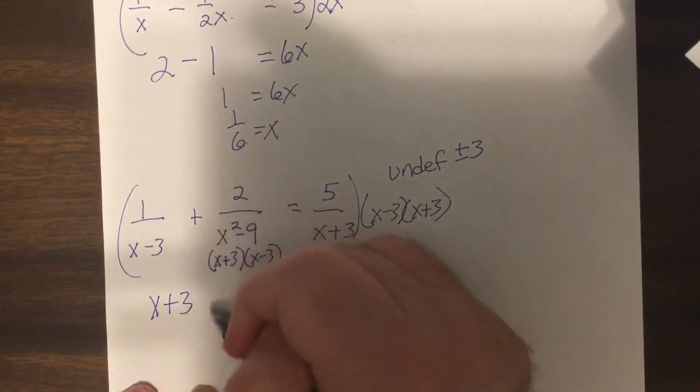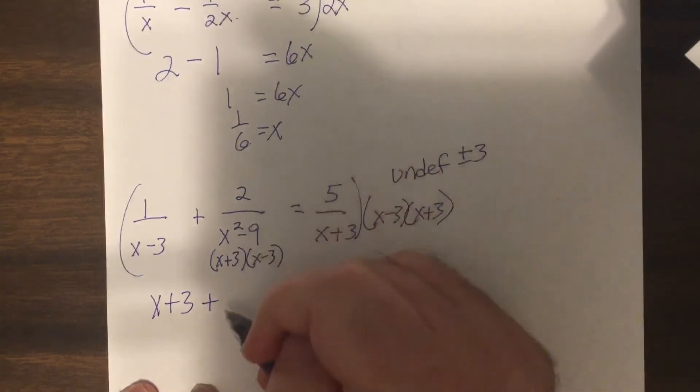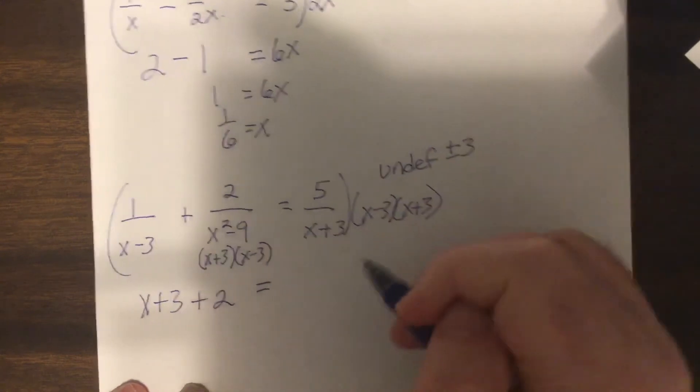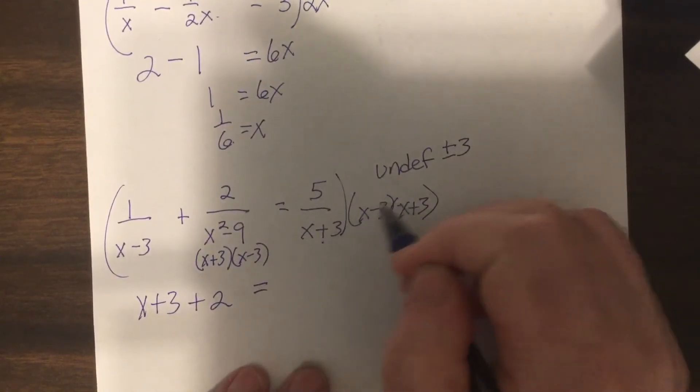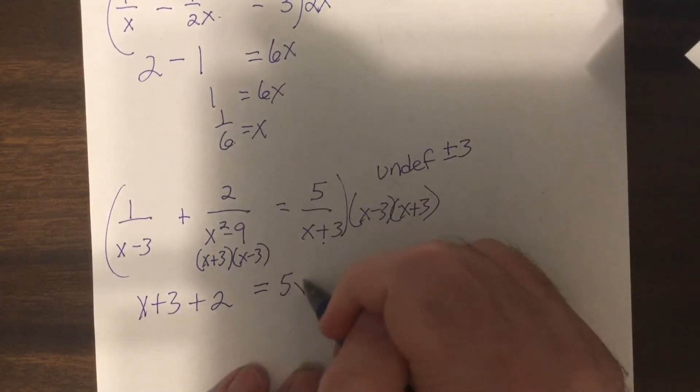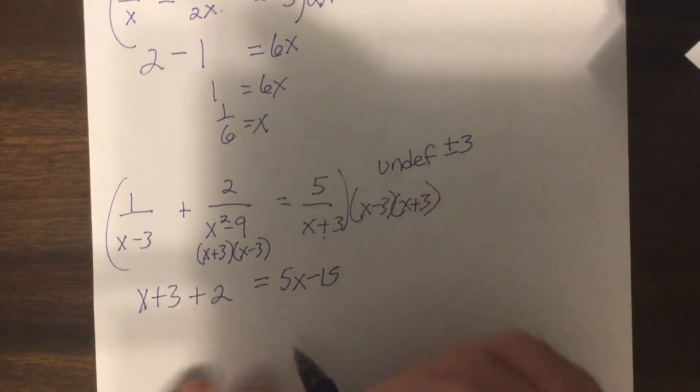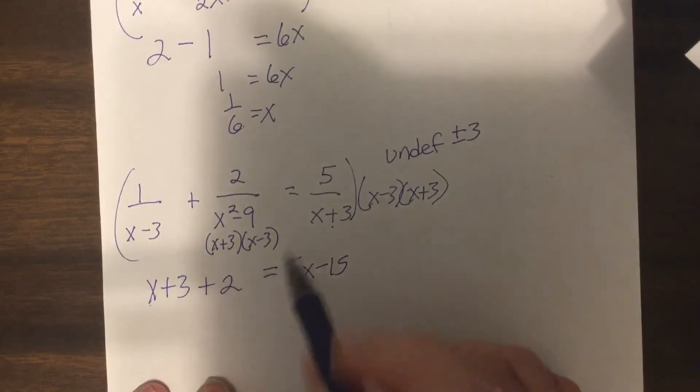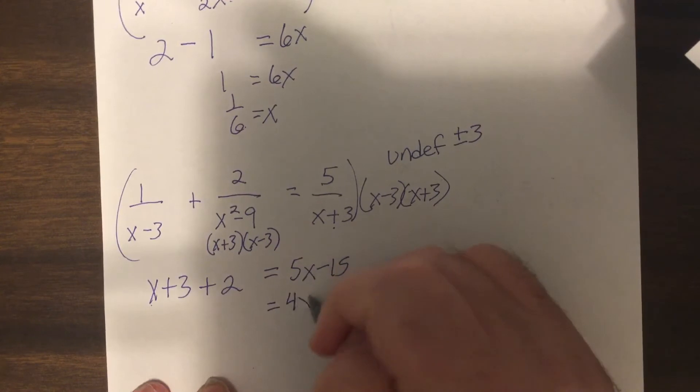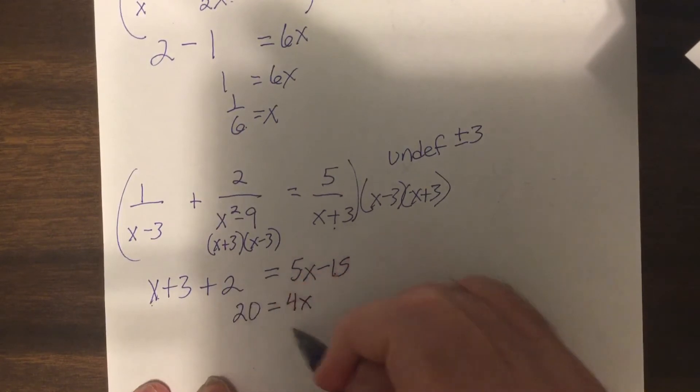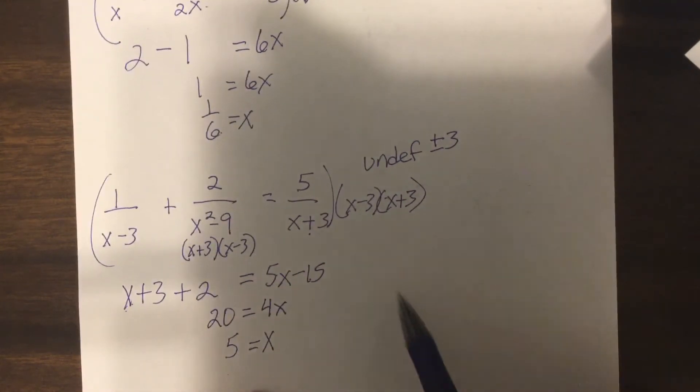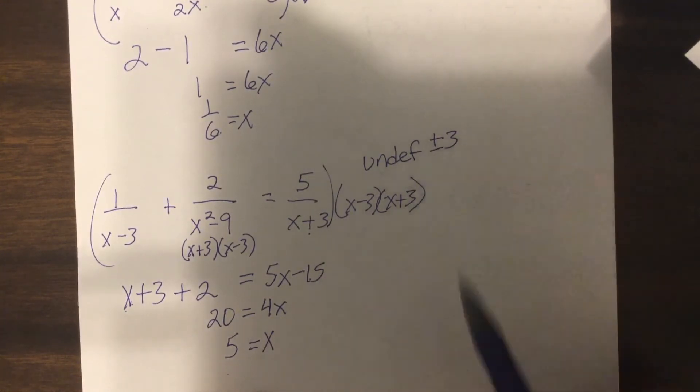All of it cancels so you just have 2. The (x+3) cancels so you'd have 5(x-3). So subtract the x, this is 4x, and 5x minus 1x equals 4x. Add 15, this would be 20, so x would equal 5. And again that number is okay because it's not part of the undefined which is plus or minus 3.